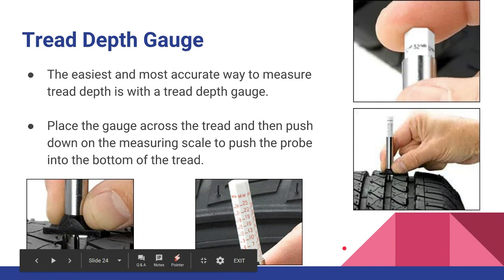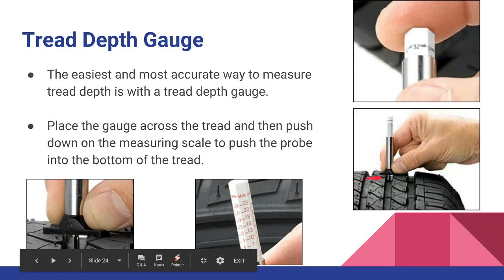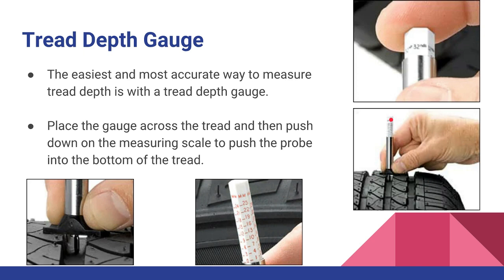A tread depth gauge goes down into the tread — it has a plunger that extends down and a flat part that sits across the tread. You push it down until it bottoms out in the tread groove while holding the body across the top of the tread, then read the scale at the top of the body cylinder. Scales are typically in millimeters or thirty-seconds of an inch — most gauges have both. Check it in several places around the tire to make sure wear is even.